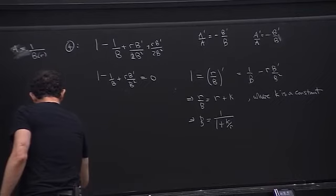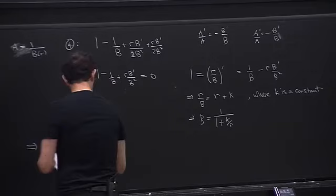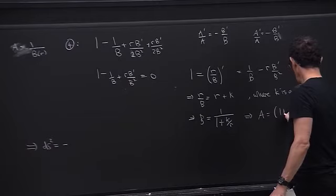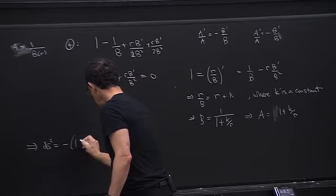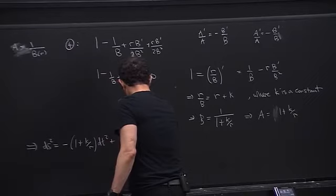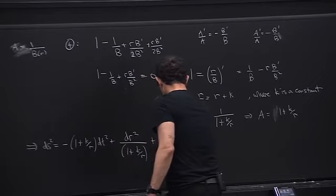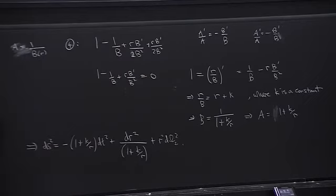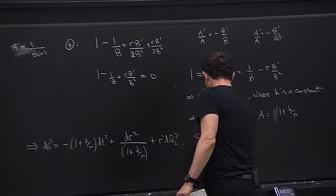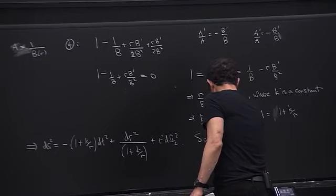In these coordinates the metric looks like: ds squared = -(1 + K/r) dt squared + dr squared/(1 + K/r) + r squared d-omega-2-squared. That's the Schwarzschild solution — the Schwarzschild metric.